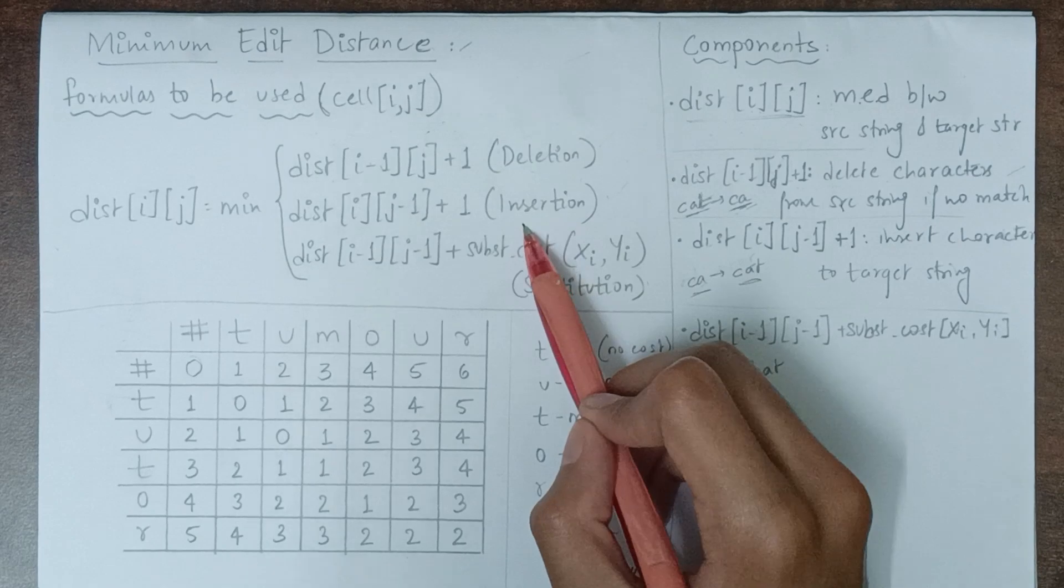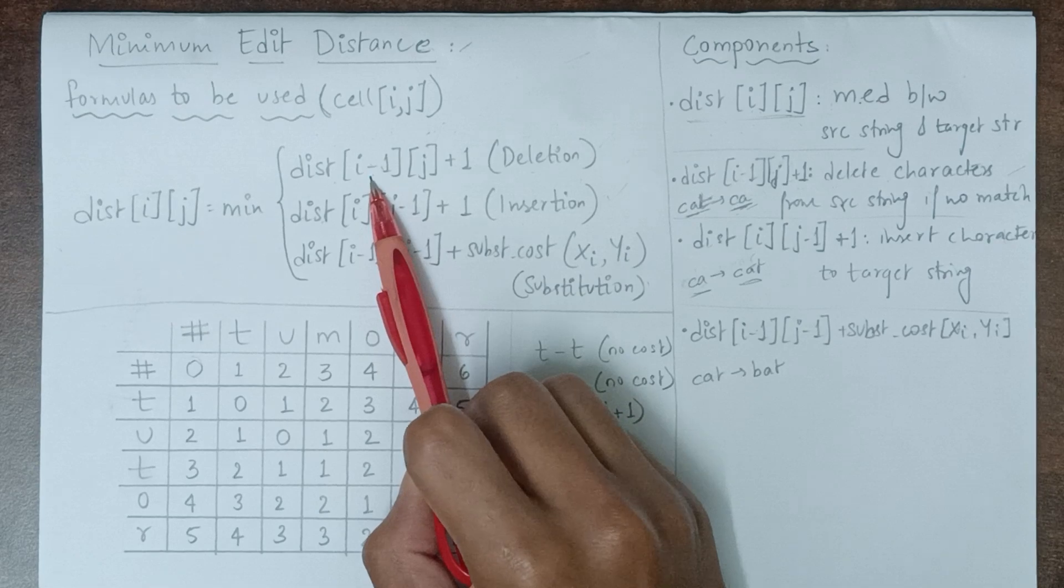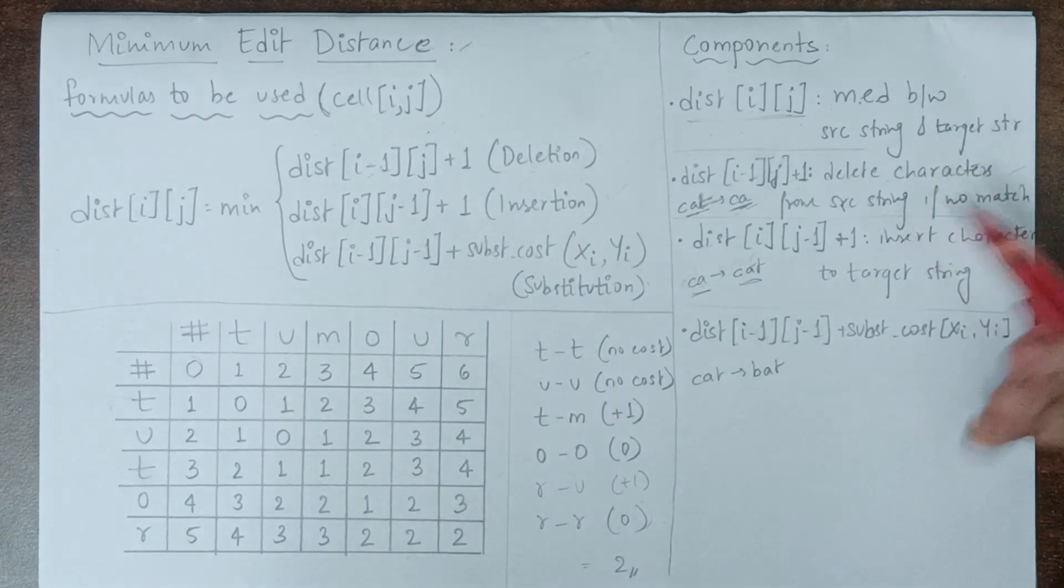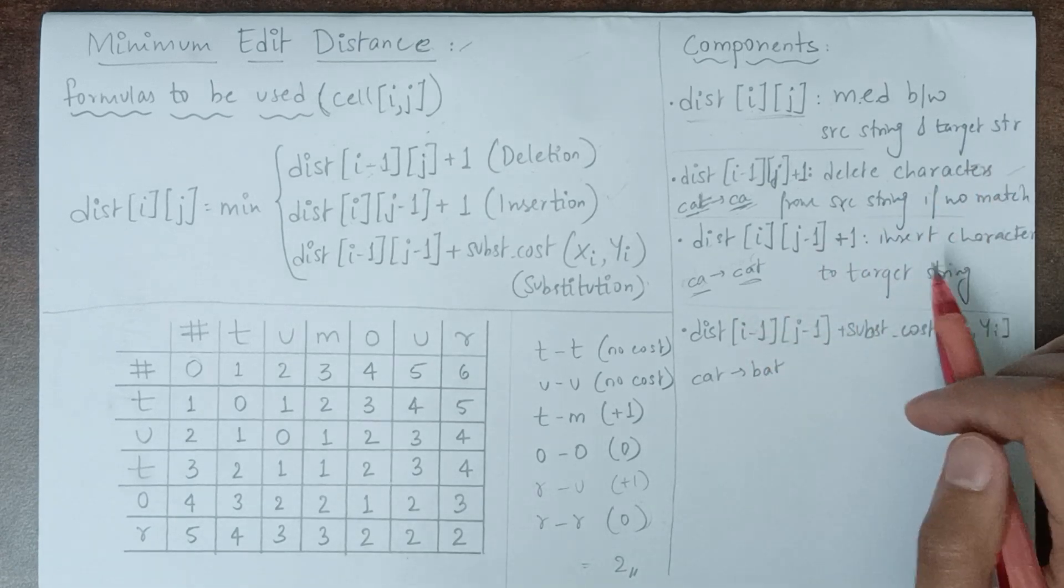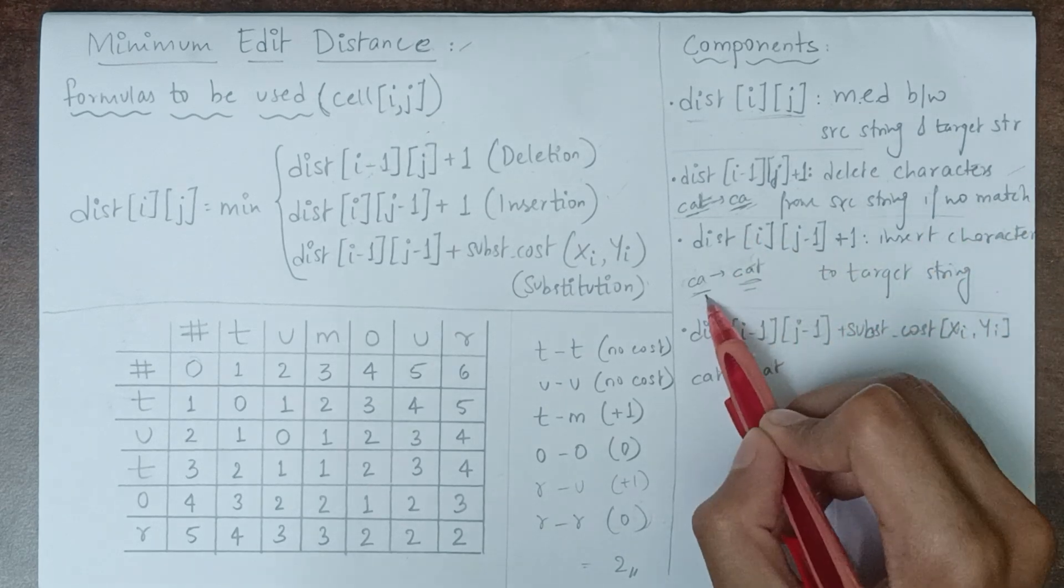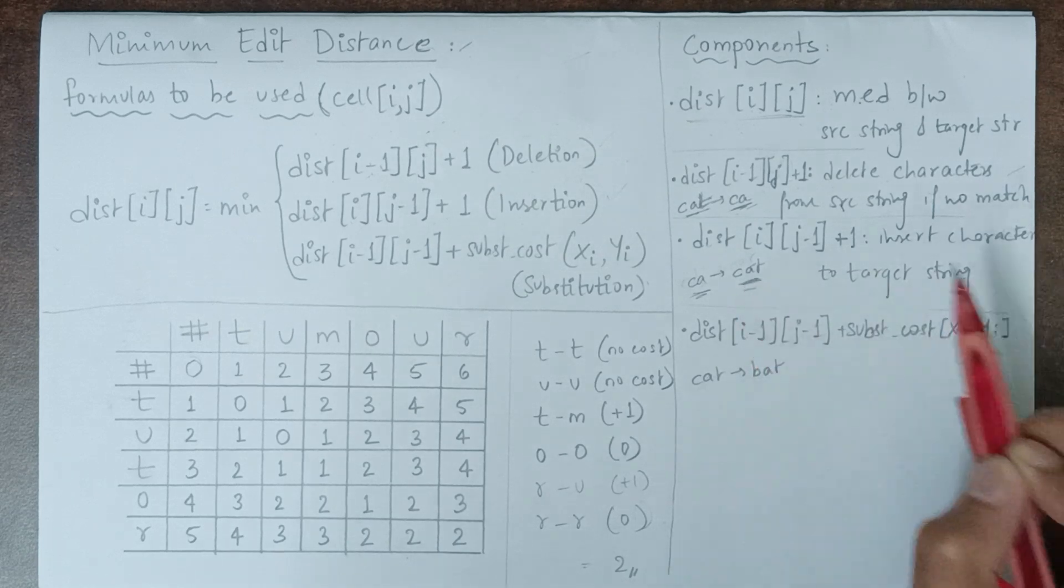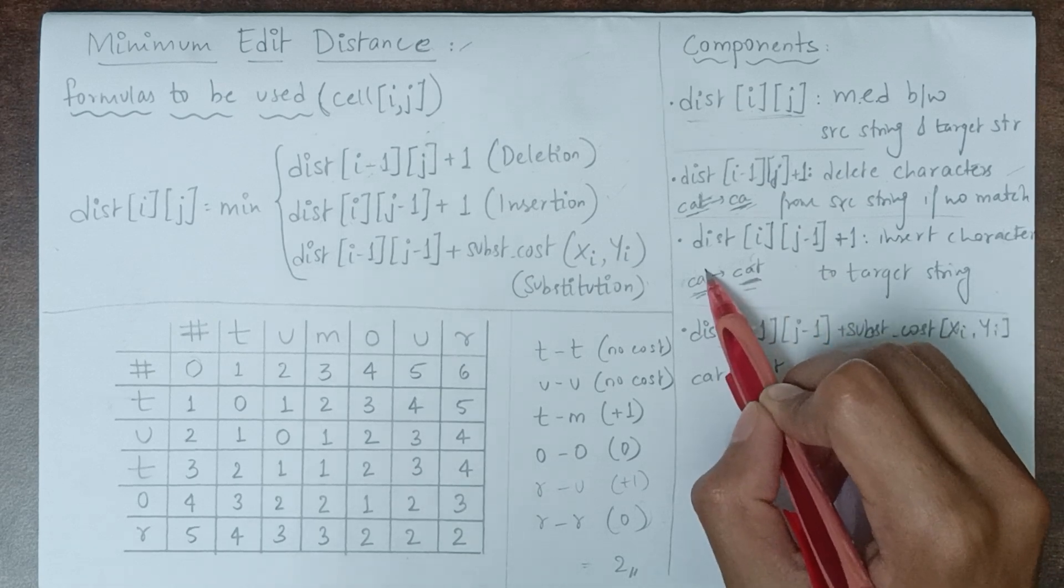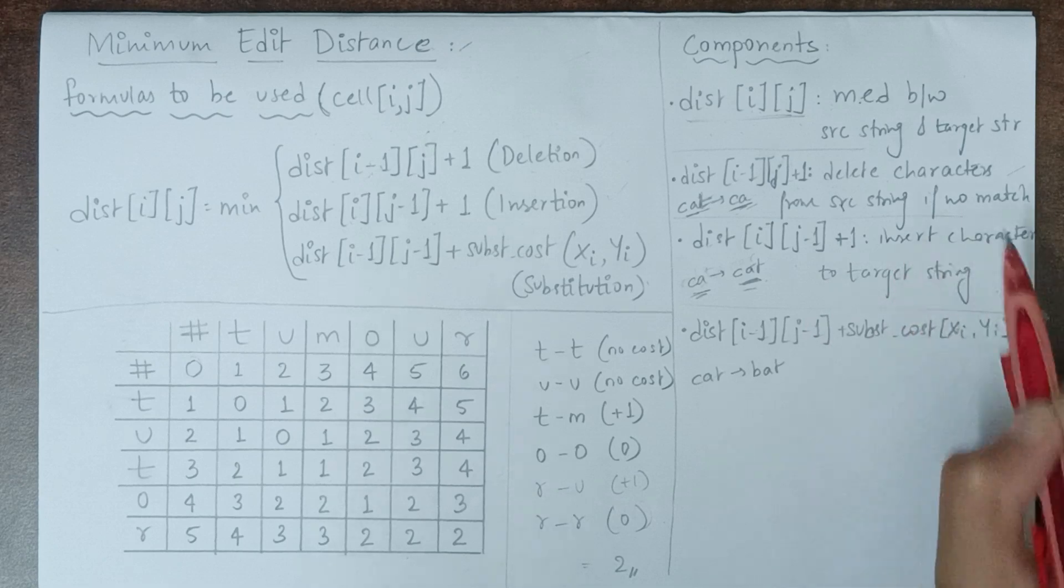Moving to insertion, there's a slight change in the formula: distance[i, j-1] + 1. Here, rather than deleting characters from the source string, we insert characters to the target string. If you start with 'ca' and your target string is 'cat', you insert the character 't' into the target string.